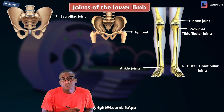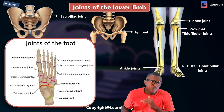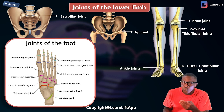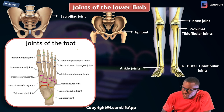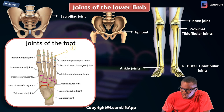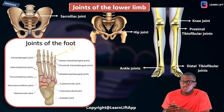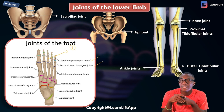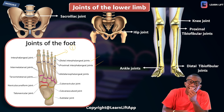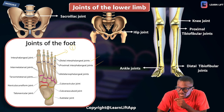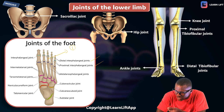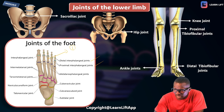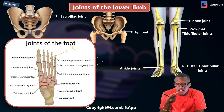The joints of the foot include several types, since the foot has three parts: the tarsal bones, the metatarsal bones, and the phalanges. Within the phalanges, we have the interphalangeal joints, divided into two: the distal interphalangeal joint (far) and the proximal interphalangeal joint (close).